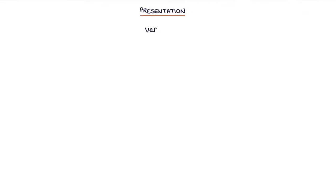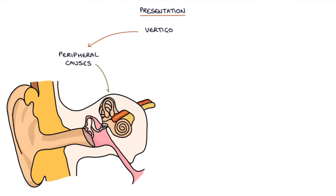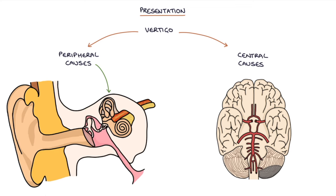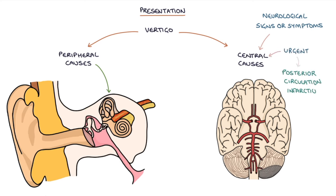It's essential to differentiate in a patient presenting with vertigo between peripheral causes — meaning causes in the inner ear — and central causes, meaning causes in the brain. Any neurological signs or symptoms should make you consider a central cause of the vertigo rather than vestibular neuronitis. This may require urgent management, particularly if a posterior circulation infarction — a type of stroke — is suspected.